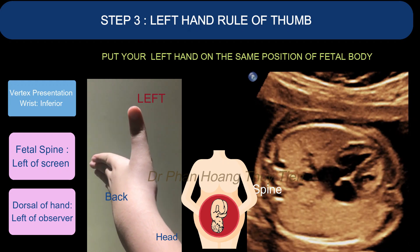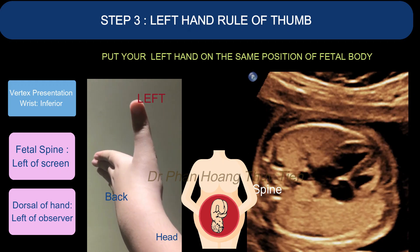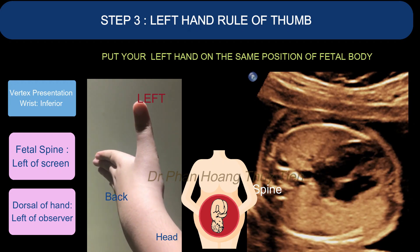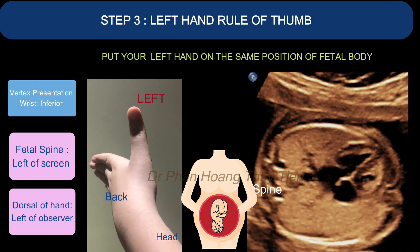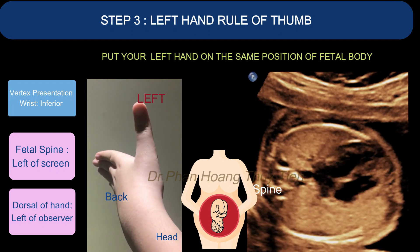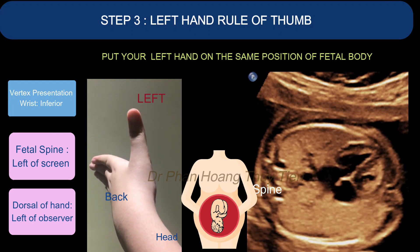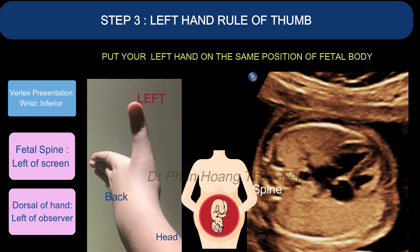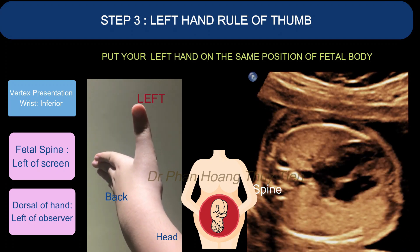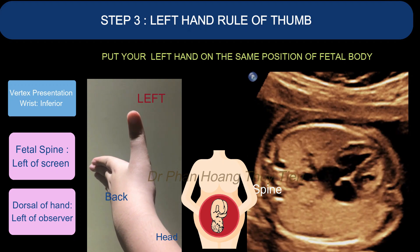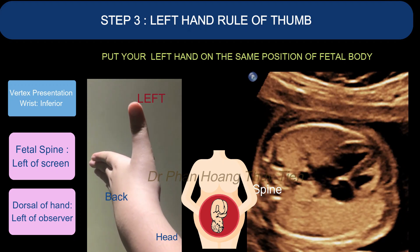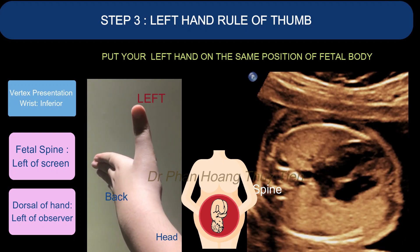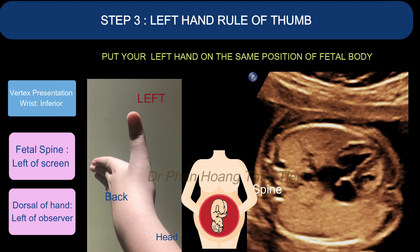Since this is a vertex presentation, the wrist — which is the fetal head — will be inferior. In this example, the fetal spine is at the left of the screen, so your hand dorsal will be facing the left of the observer.